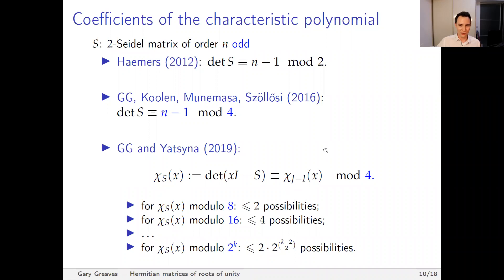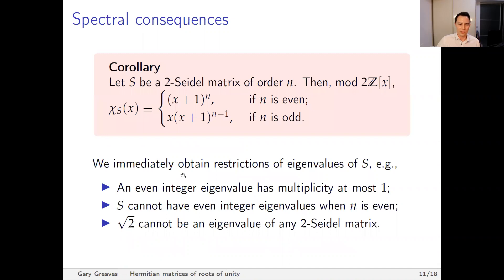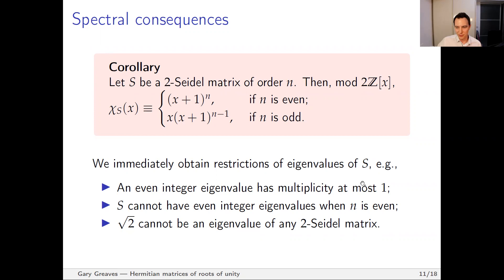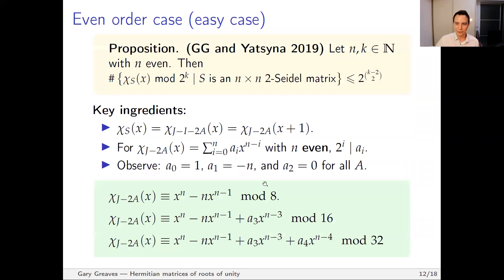For n odd, the results are similar but slightly weaker — instead of mod eight for even, this becomes mod four, and the other bounds get slightly weaker. Quickly, some spectral consequences: modulo two, the characteristic polynomial of a Seidel matrix equals a specific form depending on whether n is even or odd. Immediately you get interesting consequences: if there is an even integer eigenvalue, its multiplicity is at most one; there can't be any even integer eigenvalues if n is even; and the square root of two cannot be an eigenvalue of any 2-Seidel matrix.